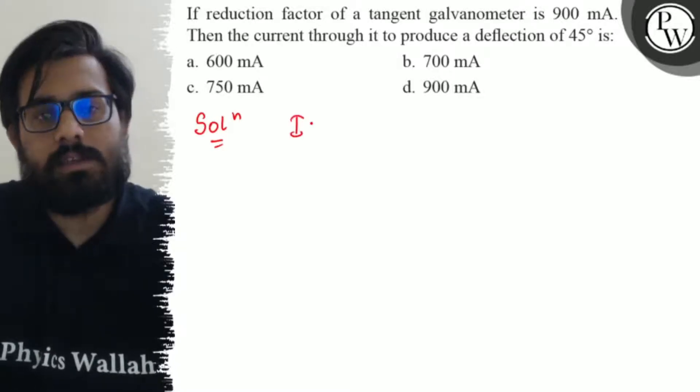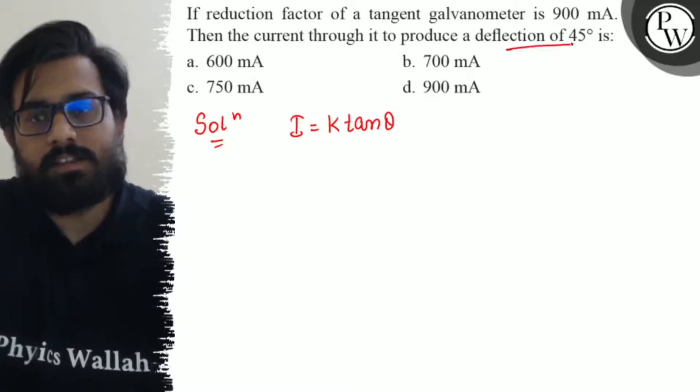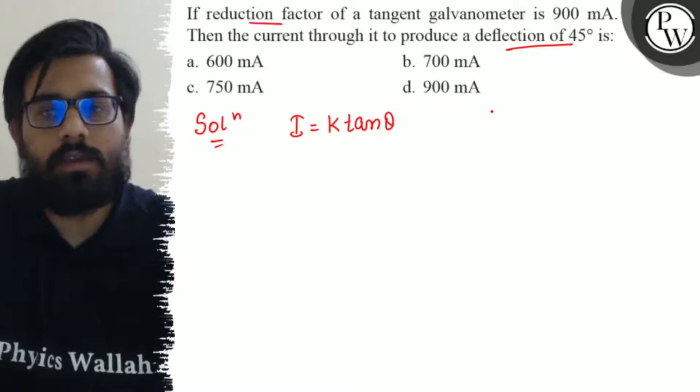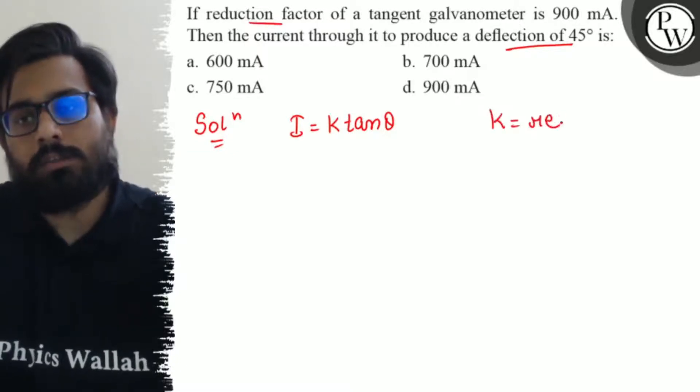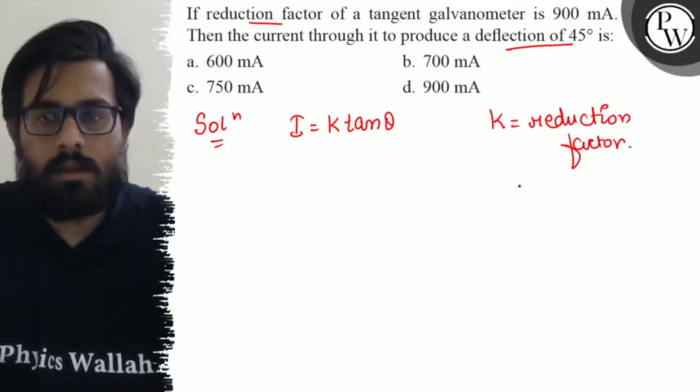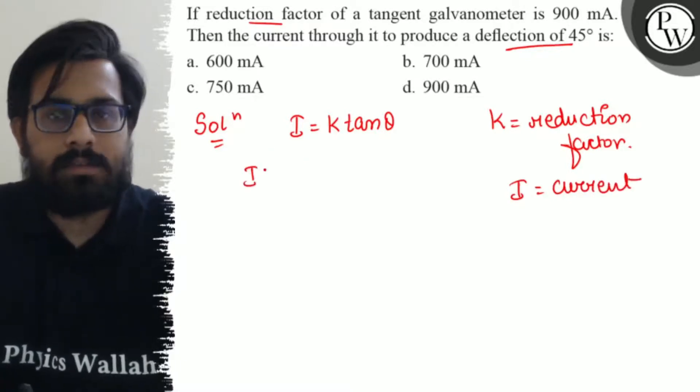So here in this question we know the relation that I is equal to K times tan theta, where theta is the deflection, and K is the reduction factor, and I is the current. And we have to find the value of current.